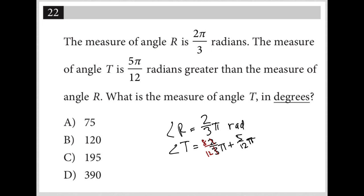Now having 12 for both denominators allows me to add the fractions together. So what I end up with here is 8/12π plus 5/12π, which is 13/12π. So there's my angle T.